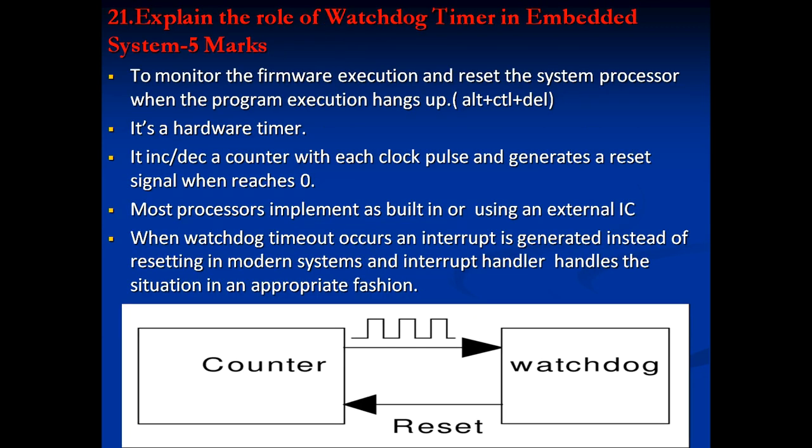Next: explain the role of watchdog timer in embedded systems, asked for 5 marks. The watchdog timer monitors firmware execution and resets the system processor when program execution hangs. It is a hardware timer that uses an increment or decrement counter to count pulses and generate a reset signal — similar to pressing Alt+Ctrl+Delete when a system hangs. Most processors implement built-in watchdog timers, or external ICs can be used.